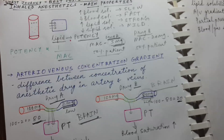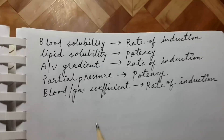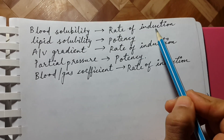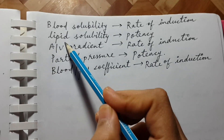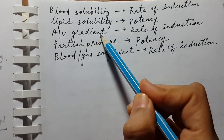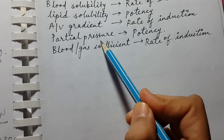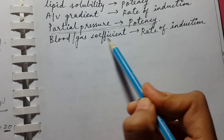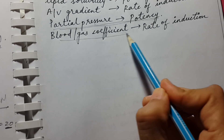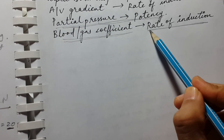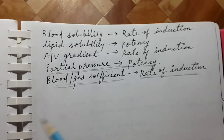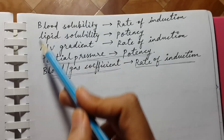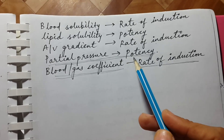To summarize: blood solubility mainly affects the rate of induction; lipid solubility mainly affects potency; the AV gradient mainly affects rate of induction; partial pressure mainly affects potency; and blood-gas coefficient mainly affects rate of induction. If you don't have time to review everything, just remember these five key points — they will be very helpful for the examination.